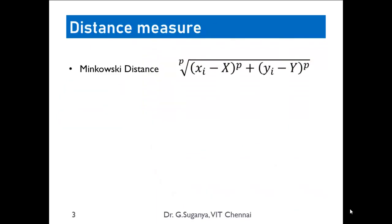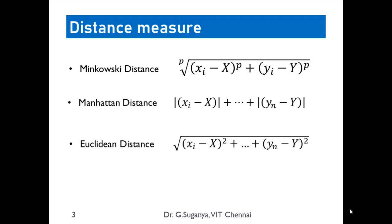Instance distances are computed using any of these distance measures: Minkowski, Manhattan, or Euclidean. Minkowski is the more general one, where the p-th root of the difference between a particular instance and the centroid is taken. Manhattan is obtained by substituting p=1 in the Minkowski distance; to remove the sign problem we take the absolute value. Euclidean is similar to the root mean square error formula. Either of these distance formulas can be used to identify the dissimilarity between instances.